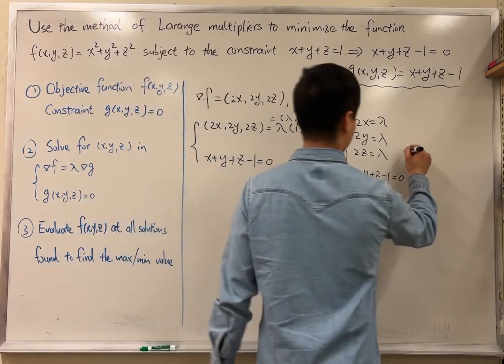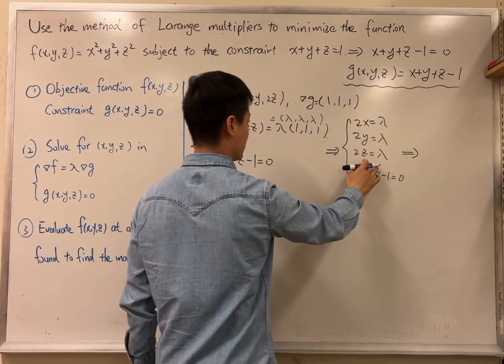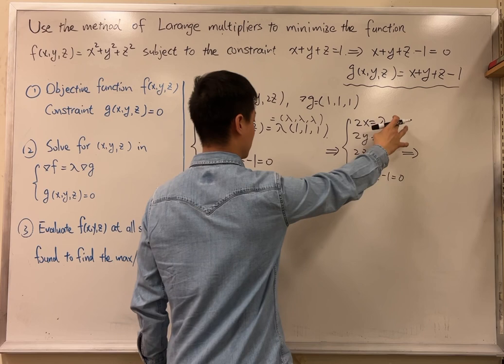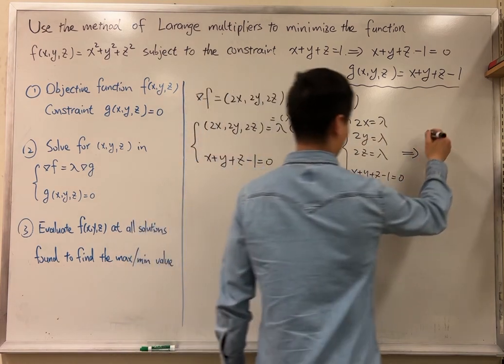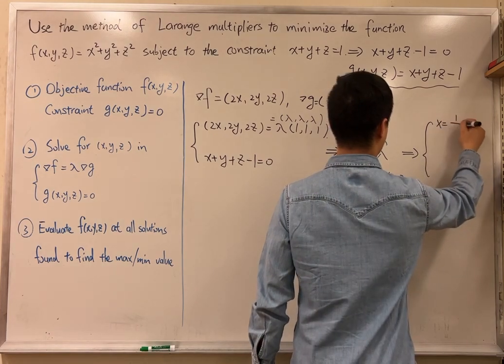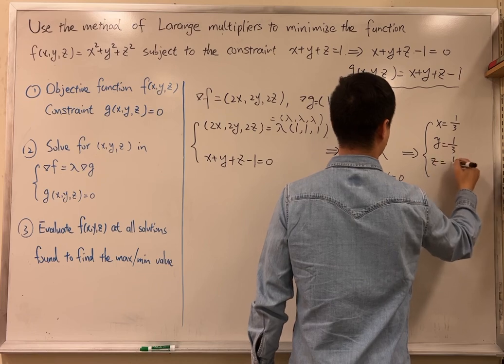And then this one happens to be very simple. You can just solve for x, y, z in each of these equations and plug them all into the last equation. So you're going to have x equal to 1/3, y equal to 1/3, z equal to 1/3.